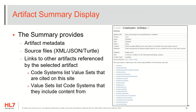On the right is an example of a code system on the HL7 terminology pages. For each artifact, there are three main portions of the page when viewing any code system or value set. The first is the summary or the metadata. The second section is the content, which includes properties and codes for code systems, and logical definitions and expansions for value sets. And the third section is the history.